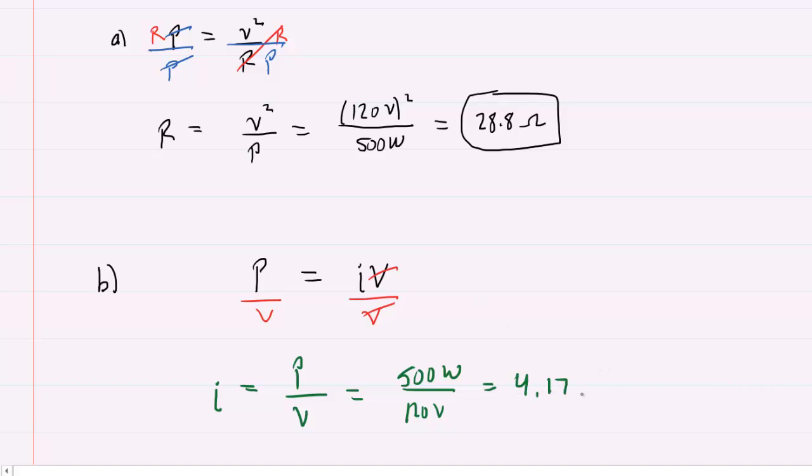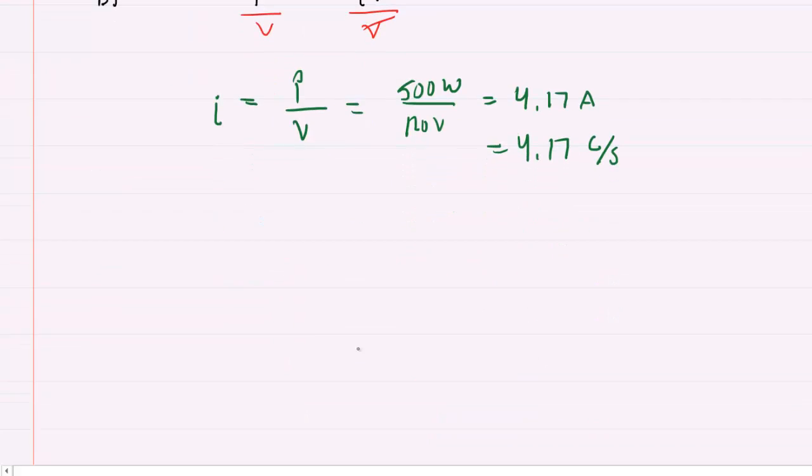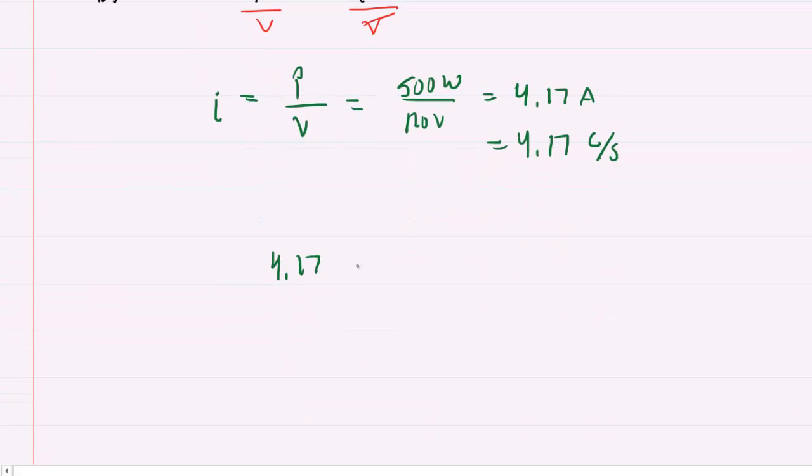Now the standard unit of current is amps, but you can also write that as coulombs per second. That's helpful because we can take 4.17 coulombs per second and convert it into electrons per second. We can do that because one electron has a magnitude of charge 1.6 times 10 to the negative 19th coulombs. If you multiply your current by this conversion factor, the coulombs cancel out and you're left with electrons per second.